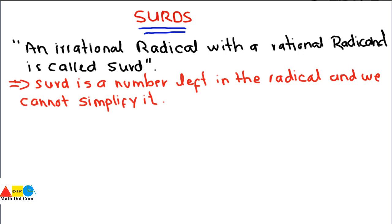Surds are basically an irrational radical with a rational radicand. In simple words, we can say a surd is a number left in the radical that we cannot simplify further.